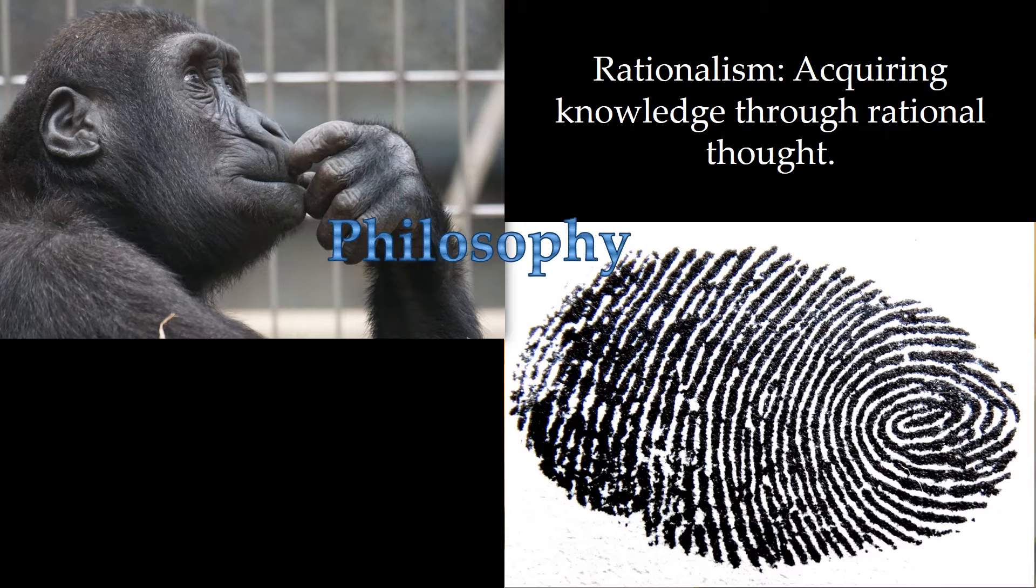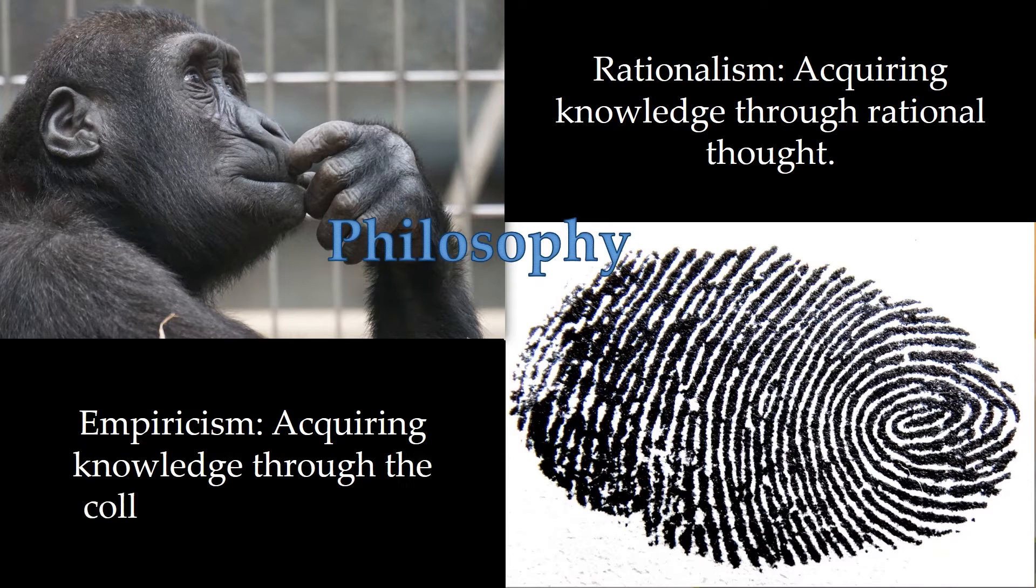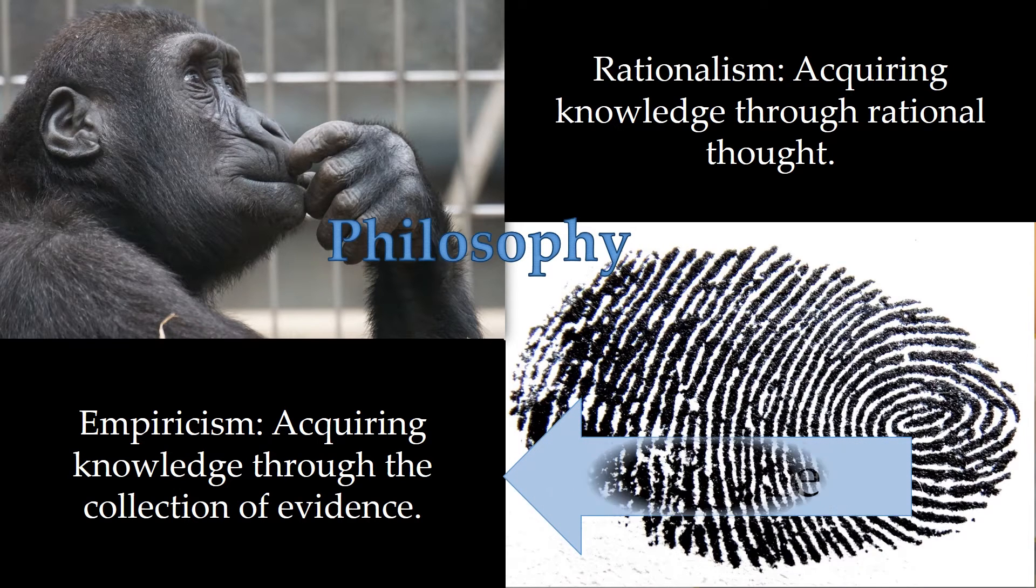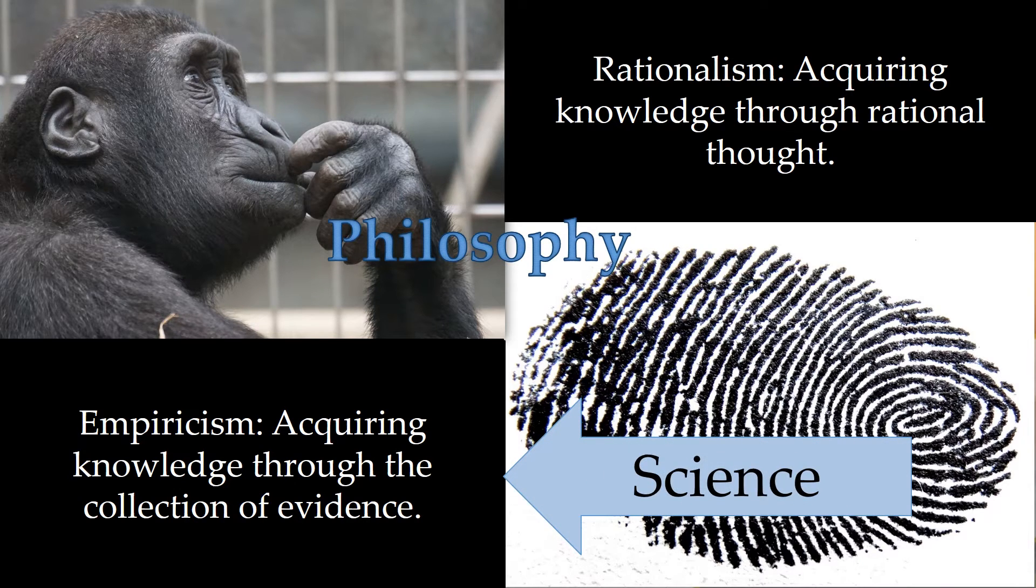The second branch is called empiricism, which is acquiring knowledge through the collection of evidence. You must have evidence for this branch, and this is what science uses. We must have evidence in science.